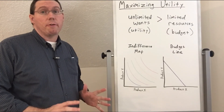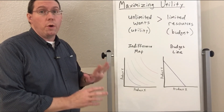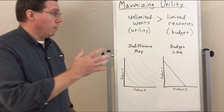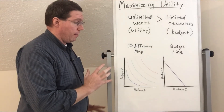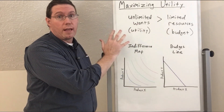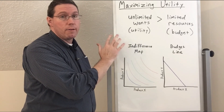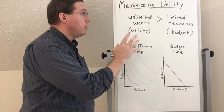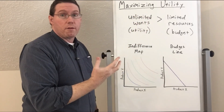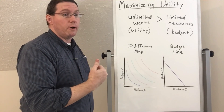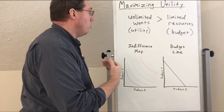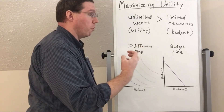What we're going to do is put together the indifference maps with the budget line that we just learned how to do. Let's review what we've done so far and get an idea of where we're going. We're trying to understand how individuals maximize their utility. All individuals have an unlimited amount of wants — there is no limit on how much satisfaction we will want, and we will constantly try to get more and more of it.